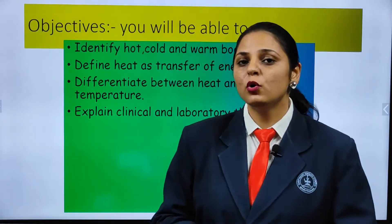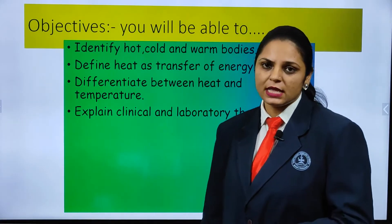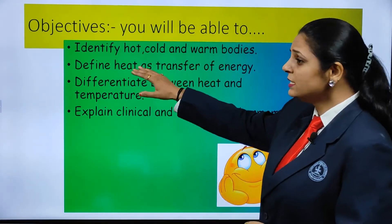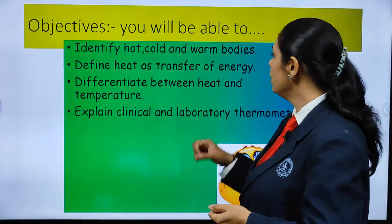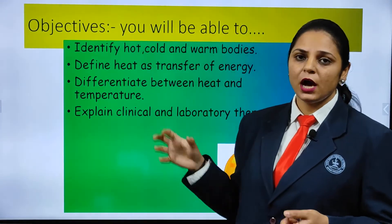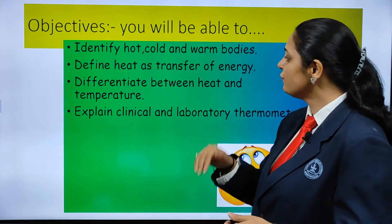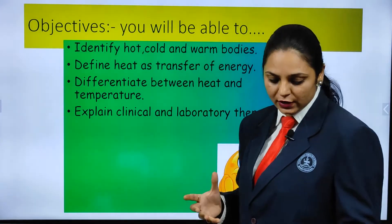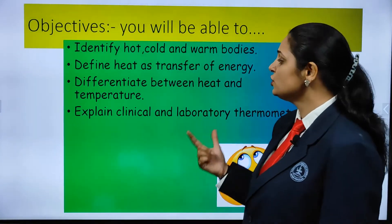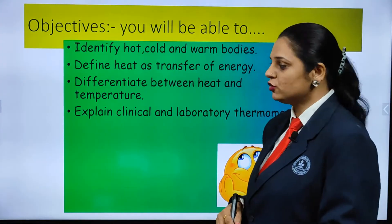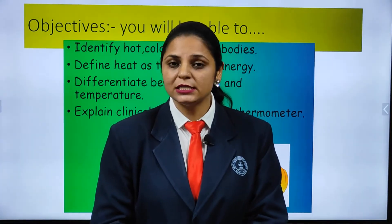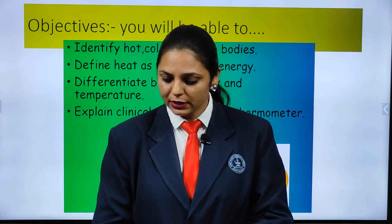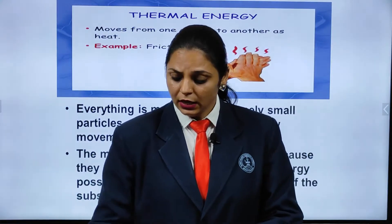In this chapter, the objectives are: to identify whether an object is hot, cold, or warm; to define heat as a transfer of energy; to differentiate heat and temperature; and to explain what a clinical thermometer and laboratory thermometer are. Many of you may already know some of these terms, but let us start now.